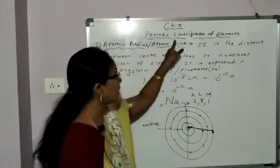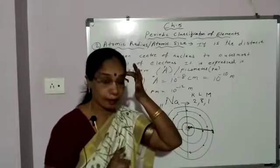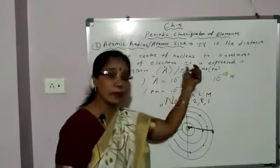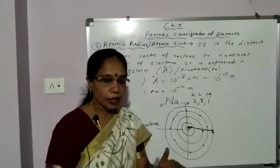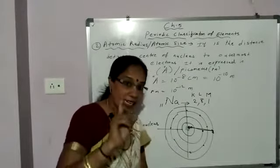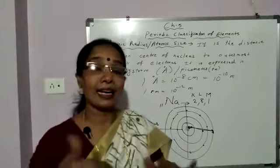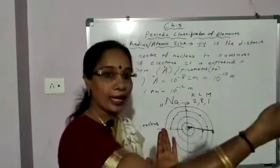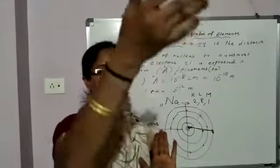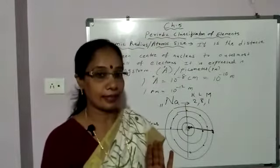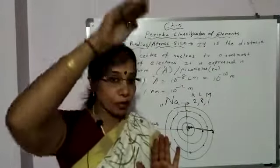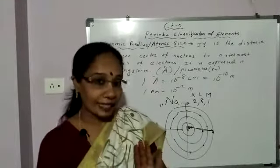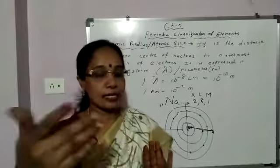So, atomic radius or atomic size is the distance between the center of the nucleus and the outermost shell of electrons, expressed in angstrom or picometer. Next, we will discuss the variation of atomic size in a period and in a group — whether atomic size increases or decreases as we move left to right in a period, or top to bottom in a group.